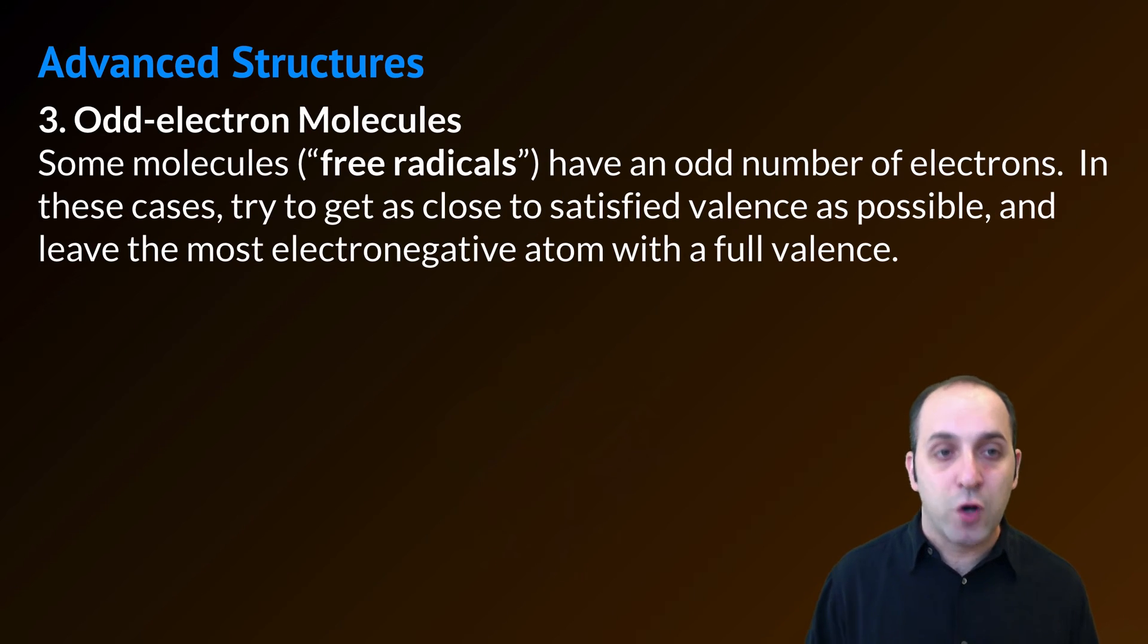Our third example is going to involve what are called odd electron molecules. These molecules also go by the term free radicals, and they have an odd total number of valence electrons. Whenever you're dealing with an odd electron molecule, you want to try to get as close to satisfying the valence as possible through drawing your Lewis structure. And then you want to leave the most electronegative atom with a full valence and give the lesser electronegative atom the odd number of electrons. Our example is going to be nitrogen monoxide or NO. Notice that the way that this is written, the odd electron gets placed as a dot on the atom that has it.